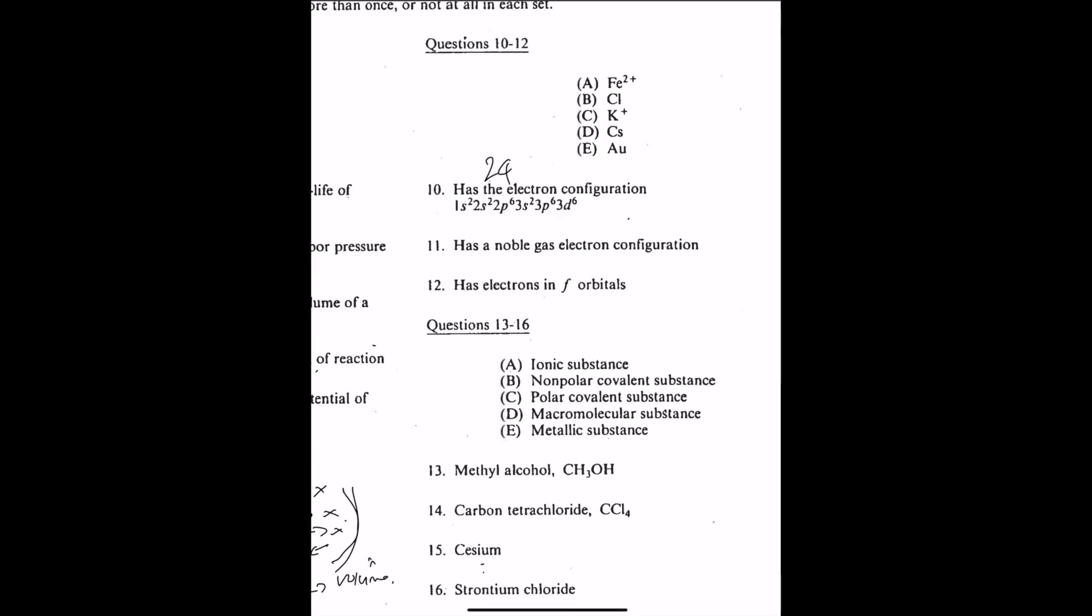Number 10 to 12. It has the electron configuration like so. From this, we can know that the substance we're looking for has 10 and 18. Actually, sorry, it should be 24 electrons. Iron usually has 26 electrons, but its ion has 24 electrons. So it should be A.